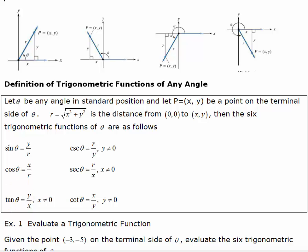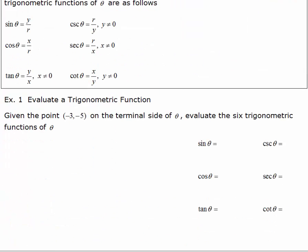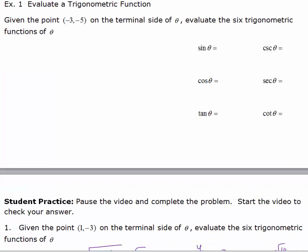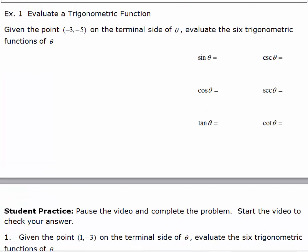Let's try the first example. We want to evaluate the six trigonometric functions given an ordered pair. The ordered pair is negative 3, negative 5, on the terminal side of theta. To find the six trigonometric functions, we need to know x, which is negative 3; y, which is negative 5; and r. Once we know those three things, we can set up our ratios.